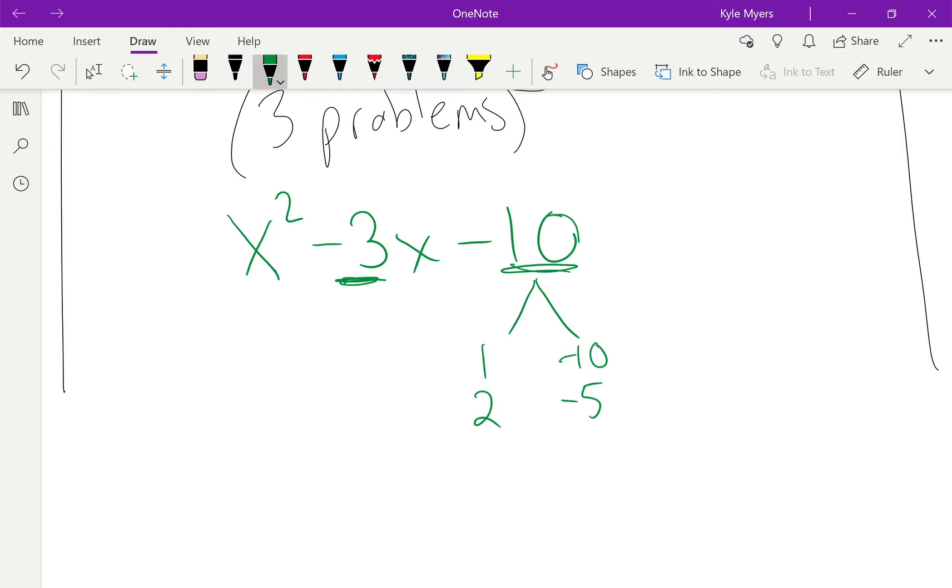We want a negative 3. So those are our factors, and then I just throw an x in front of both of them. That's a plus 2. So I put x plus 2 and x minus 5, and I'm done.